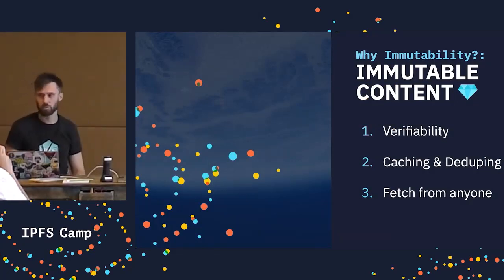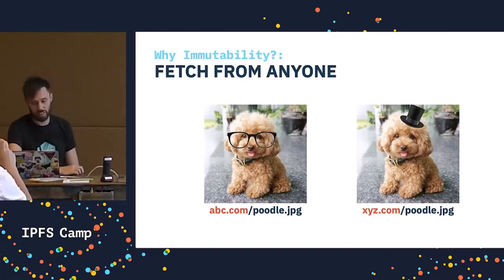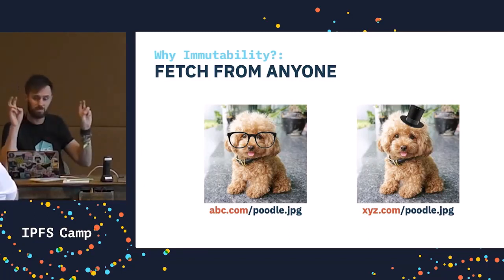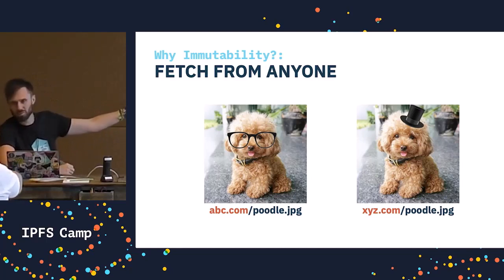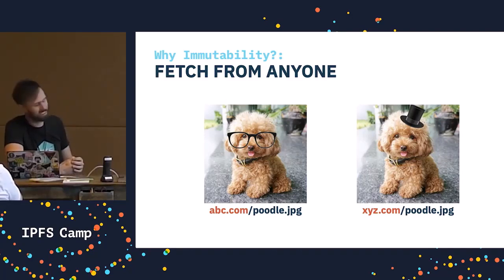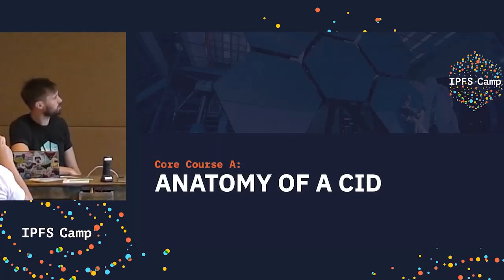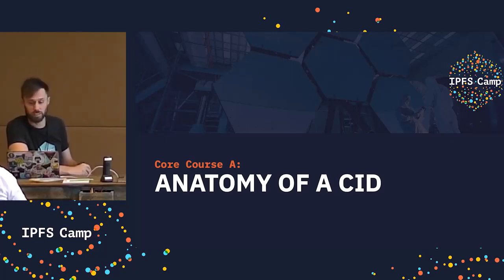Fetch from anyone. If the content is immutable and I can verify its integrity, I should be able to get it from anyone — and this suits P2P really well. But that's not true on the web today. If two sites are hosting the same content, how do I know which poodle is the correct poodle? We can't trust that any of them are correct. They need to come from a trusted source because I can't verify integrity. So we use content addressing in IPFS, and we use a special hash called a CID — content identifier. We're going to take a closer look now in part two of five.